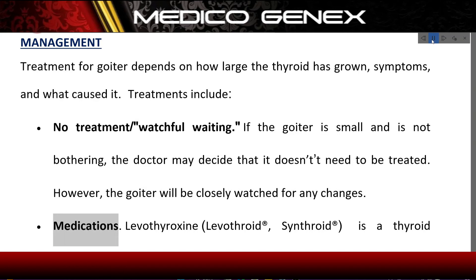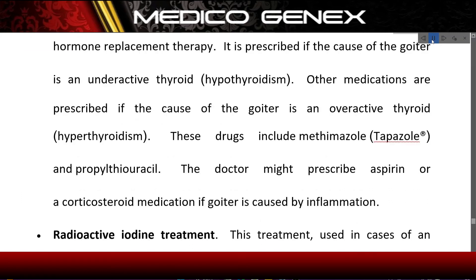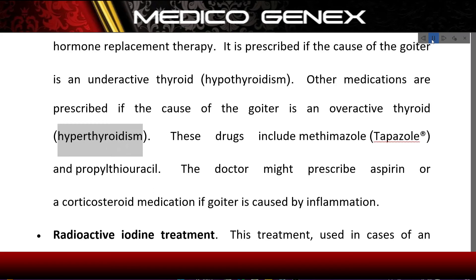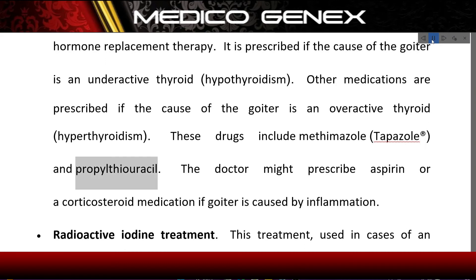Medications: Levothyroxine (Levothroid®, Synthroid®) is a thyroid hormone replacement therapy prescribed if the cause of the goiter is an underactive thyroid (hypothyroidism). Other medications are prescribed if the cause is an overactive thyroid (hyperthyroidism); these drugs include methimazole (Tapazole®) and propylthiouracil. The doctor might also prescribe aspirin or a corticosteroid medication if the goiter is caused by inflammation.